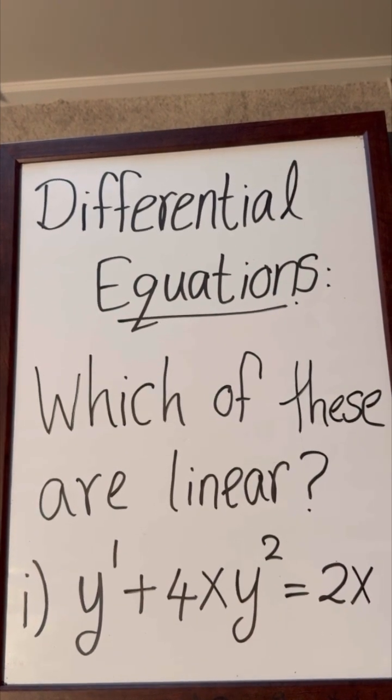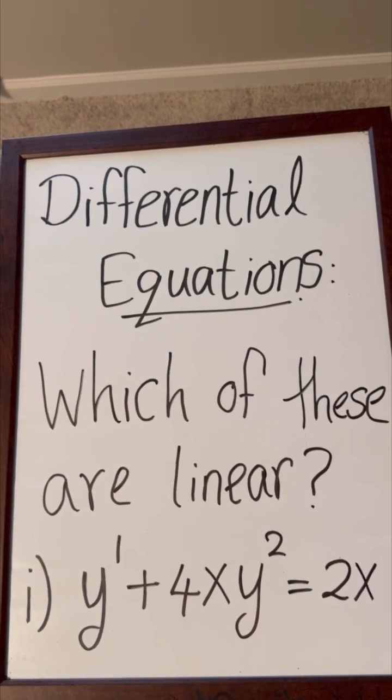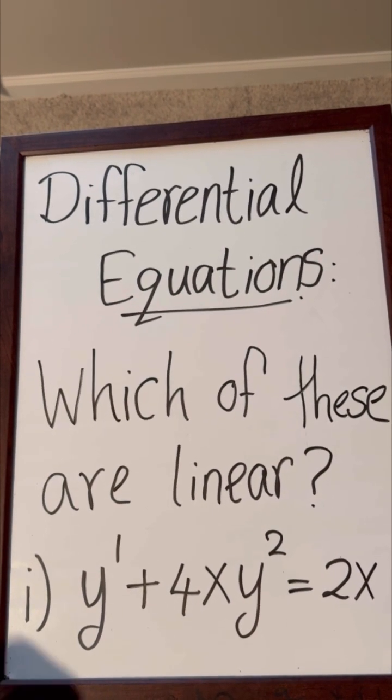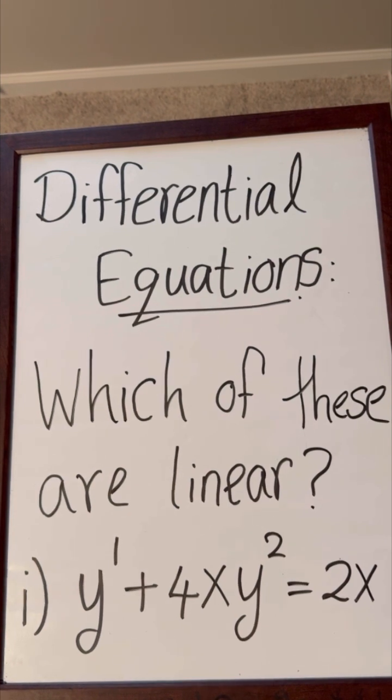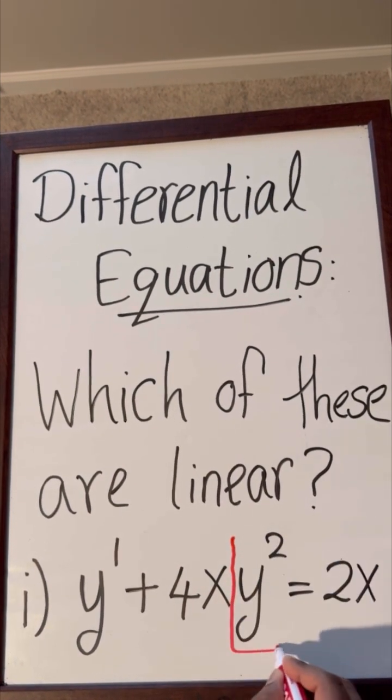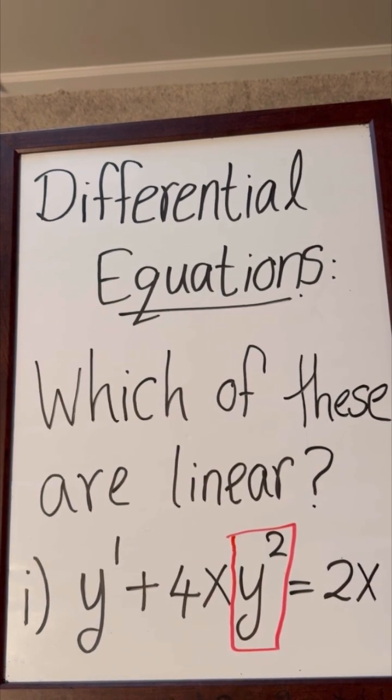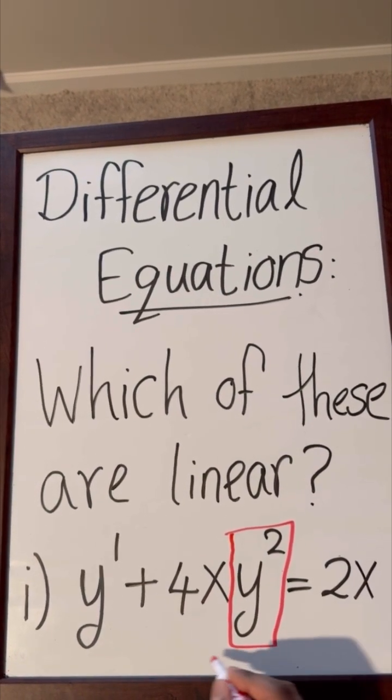Now let's consider the first example. You are given y prime plus 4xy squared equals 2x. This differential equation is nonlinear because of this term, y squared. We cannot have any power of y, so this is nonlinear.